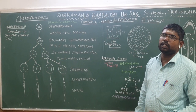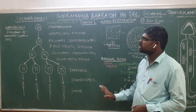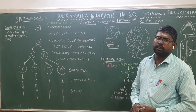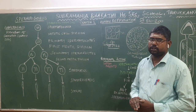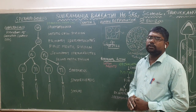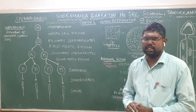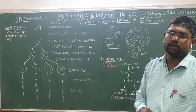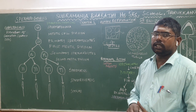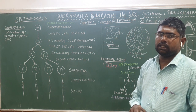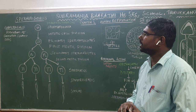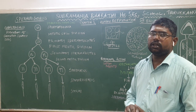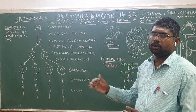Now we can list out the events. The first event is gametogenesis, that means gamete formation. The second event is fertilization, which means fusion of two gametes. And then insemination, and then implantation. Likewise, the events may be processed one by one.